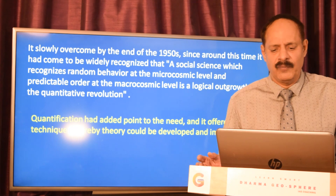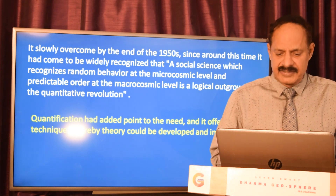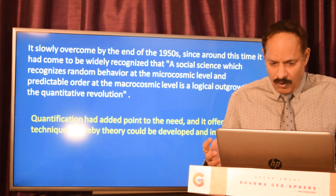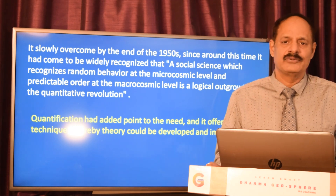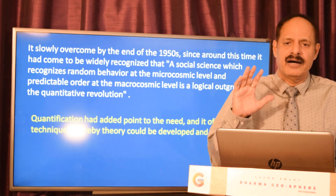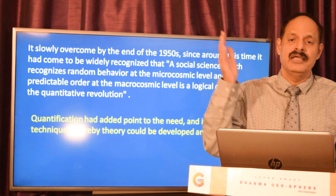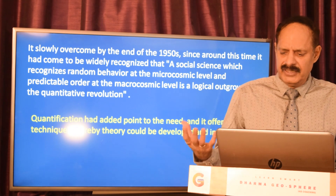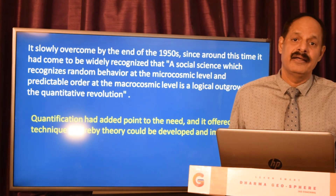That resistance was slowly overcome by the end of the 50s, as it came to be widely recognized that a social science which recognizes random behavior at the microcosmic level and predictable order at the macrocosmic level is a logical outgrowth of the quantitative revolution. Quantitative revolution remained important and stayed with many social sciences, including human geography. Quantification added point to the need and offered a technique whereby theory could be developed and improved upon.